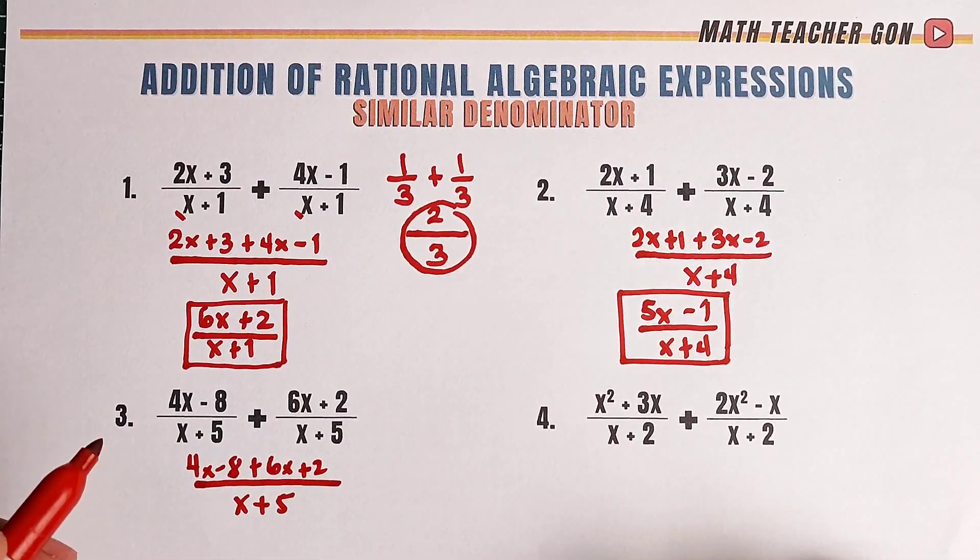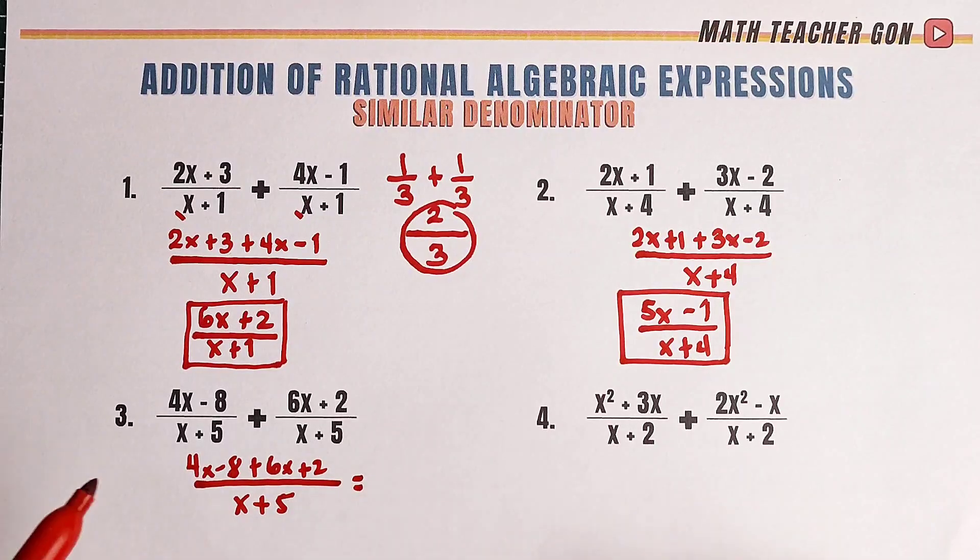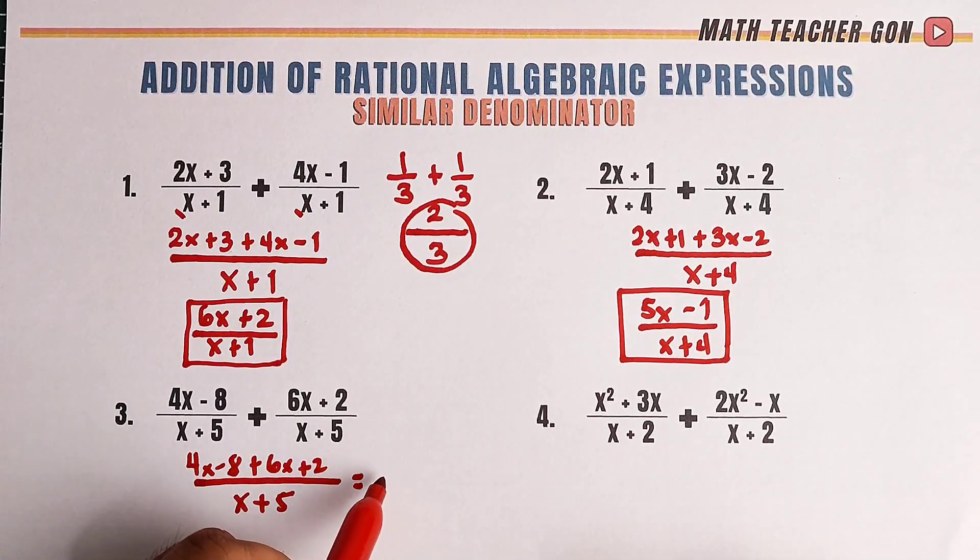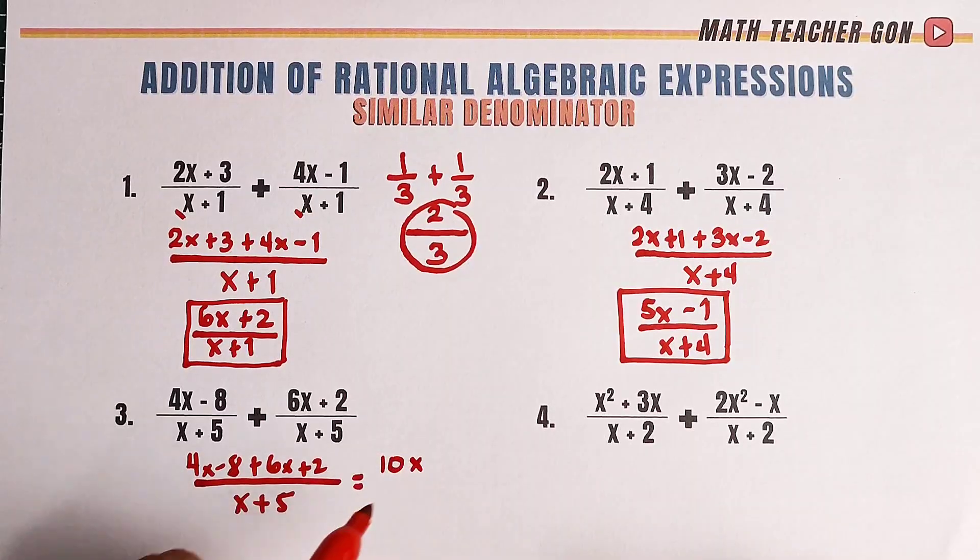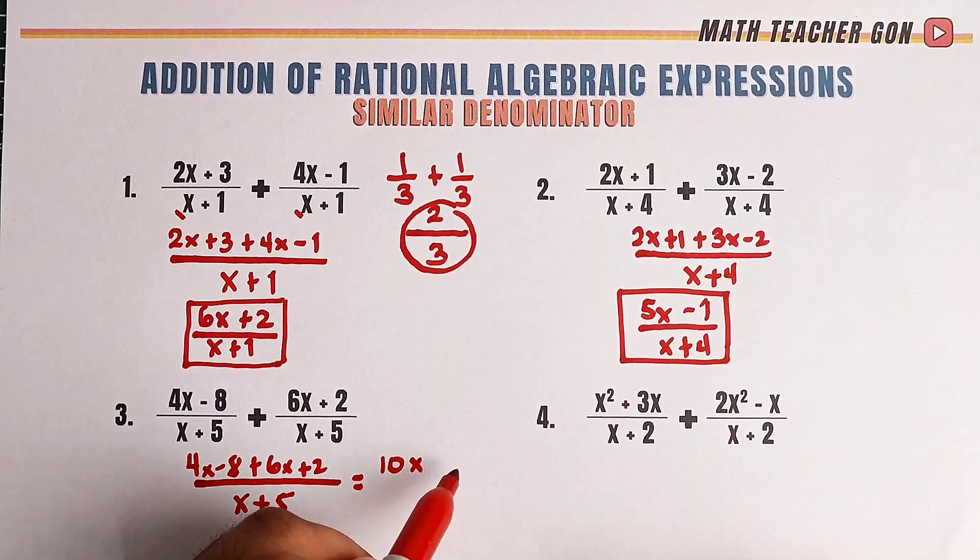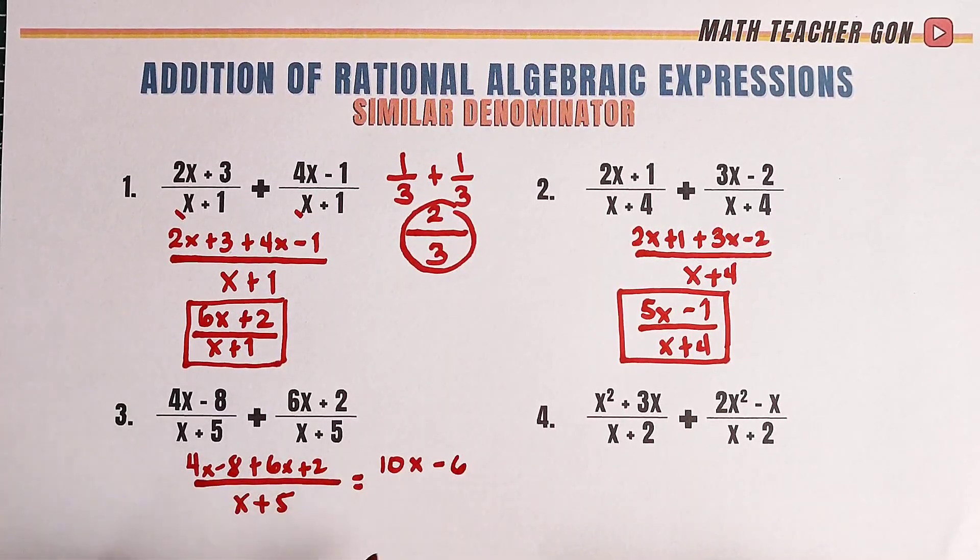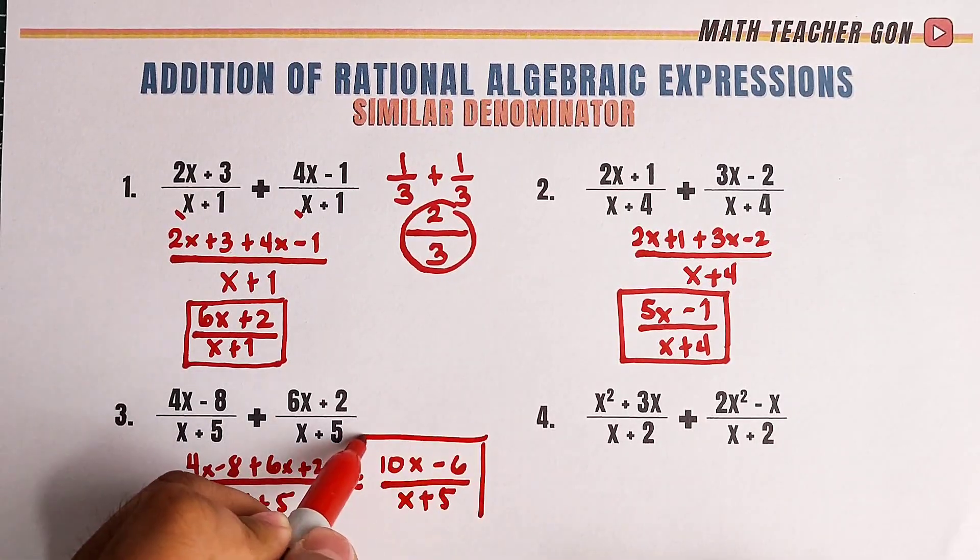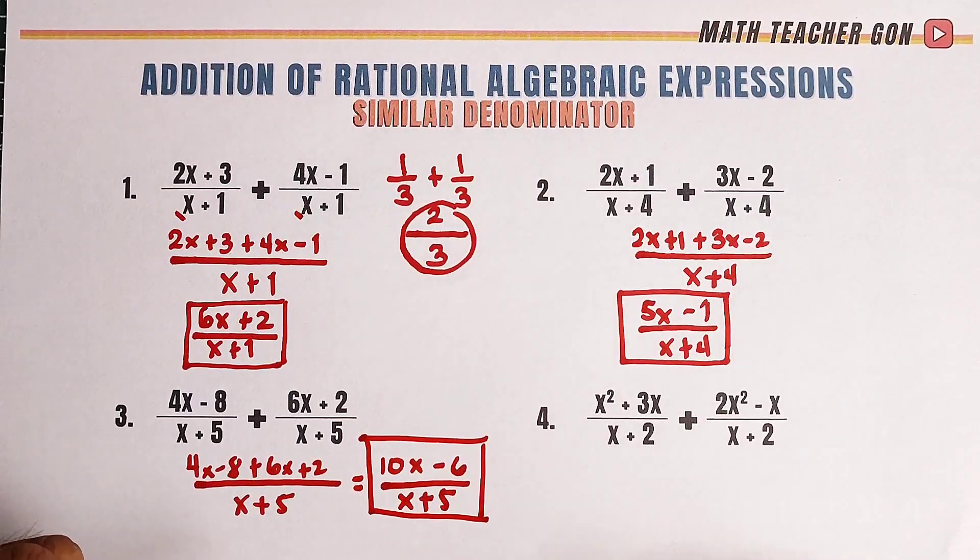So what we can do here, combine these terms, I will put the answer here. We have 4x plus 6x, that would be 10x. Negative 8 plus 2, that would be negative 6 over x plus 5. And this is the correct answer for number 3.